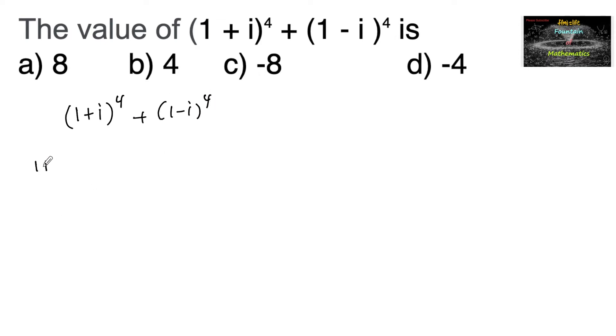Let us simplify (1 + i) whole power 4, which is equal to (1 + i) whole square, whole square. So (1 + i) whole square is 1 plus i square is minus 1, plus 2 into 1 into i, that is 2i, again whole square.